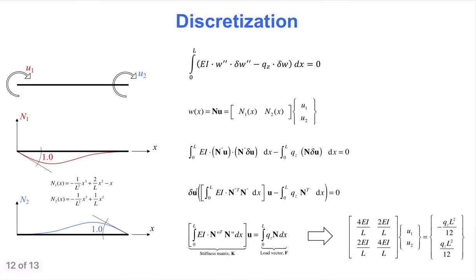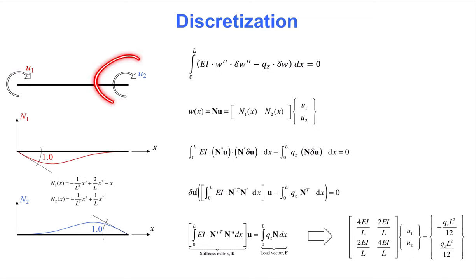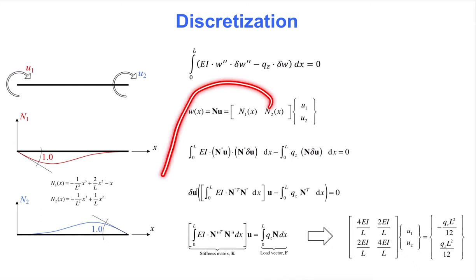The next slide shows the finite element discretization for the beam element. The starting point is the weak form of the boundary value problem. Next, we write the displacement anywhere along the element, w of x, as a vector of shape functions times the vector of degrees of freedom. For the beam element, the degrees of freedom are rotations. That means shape function number one must have a unit rotation at degree of freedom number one, with zero rotation at the other degree of freedom — exactly what is shown with a red line on the left-hand side, where the equations for the shape functions are also provided. Similarly, shape function N2 has a unit rotation at degree of freedom number two, and zero rotation at the other degree of freedom.